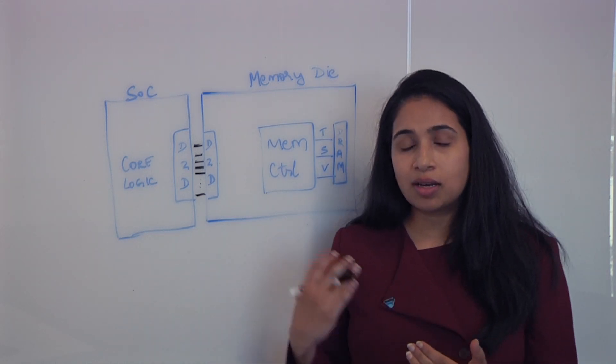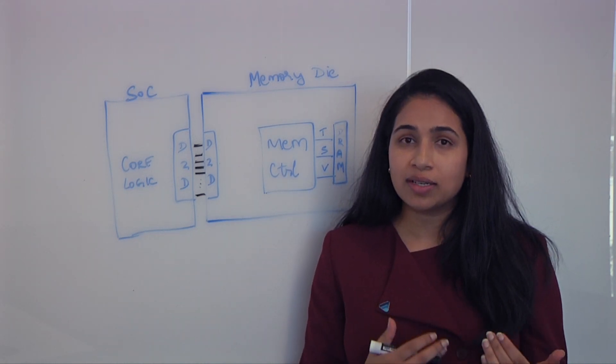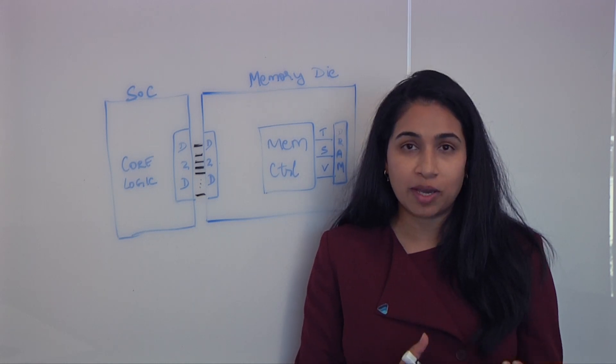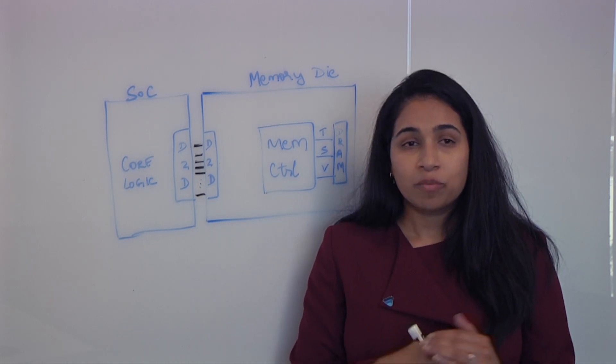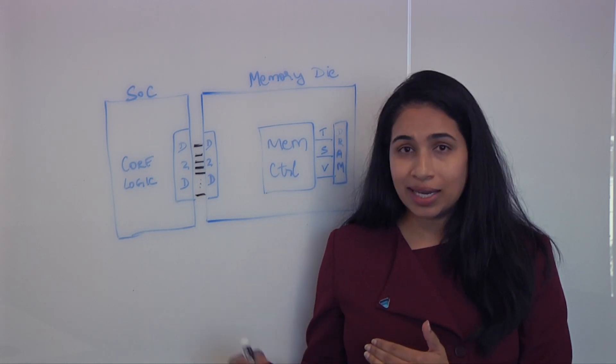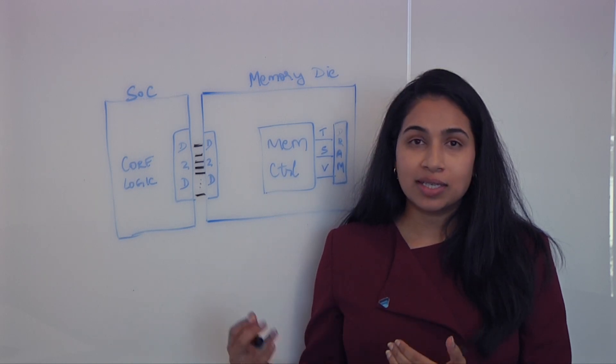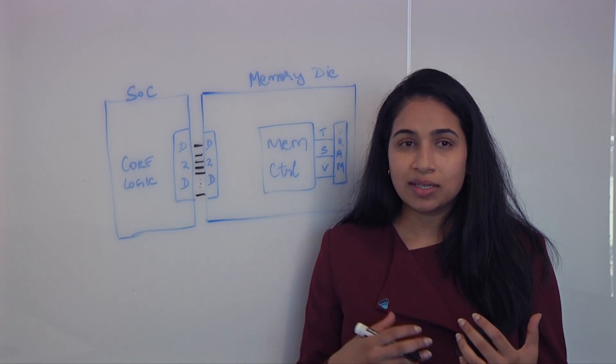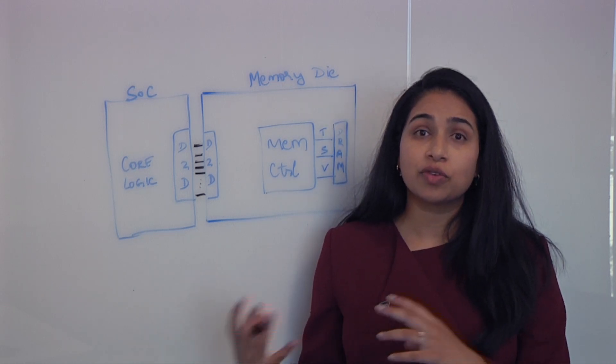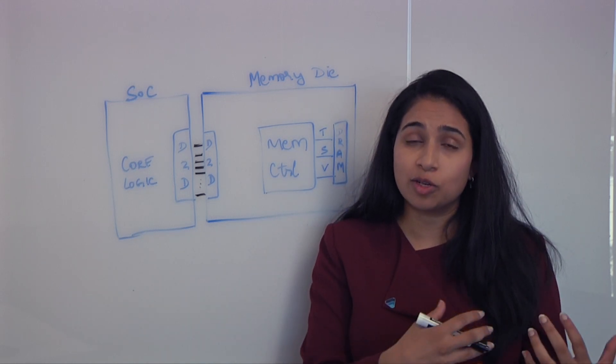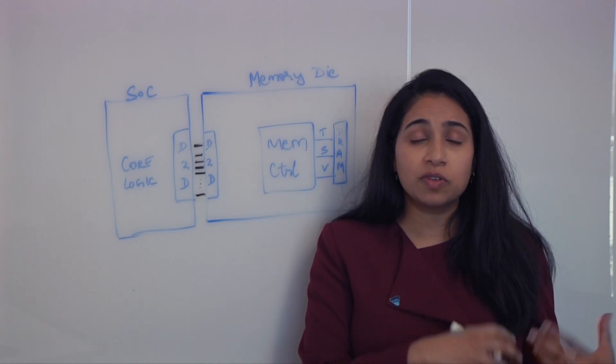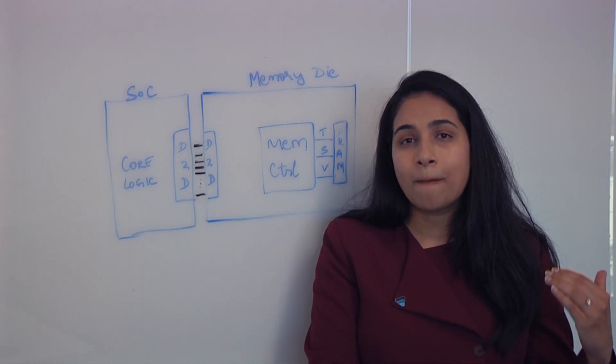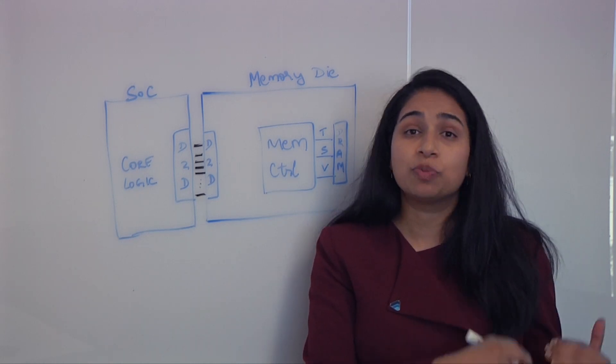We're going to see a very similar trend starting with HBM4 as well, where JEDEC is defining the generation one spec to be at 6 gigahertz. Very soon we're going to see generation two at 8 Gbps. And we are already seeing customers ask for double that data rate very soon. So what we're seeing is that the end use case is driving the need for higher and higher bandwidth, in turn, influencing the JEDEC body to up the data rates on HBM4.